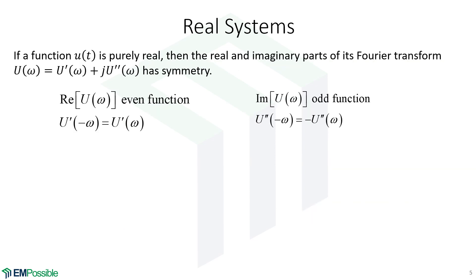Let's think about what happens when we have a real function — in this case I'm calling that U of T. If that is purely real and I calculate the Fourier transform, that Fourier transform is in general a complex number with a real and imaginary part. The single prime indicates the real part and the double prime indicates the imaginary part. It turns out if that original function is purely real, then the real and imaginary parts of the Fourier transform have a symmetry. The real part is an even function, and the imaginary part is an odd function.